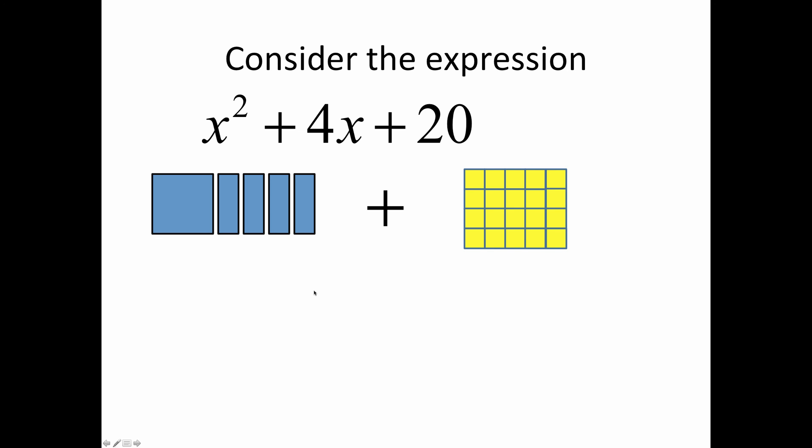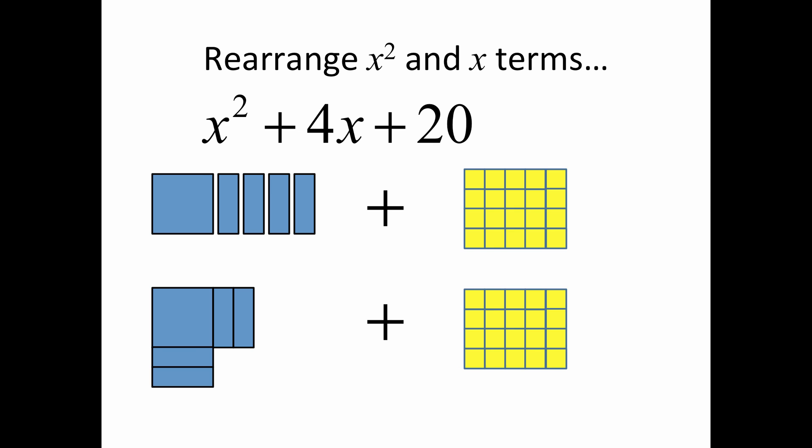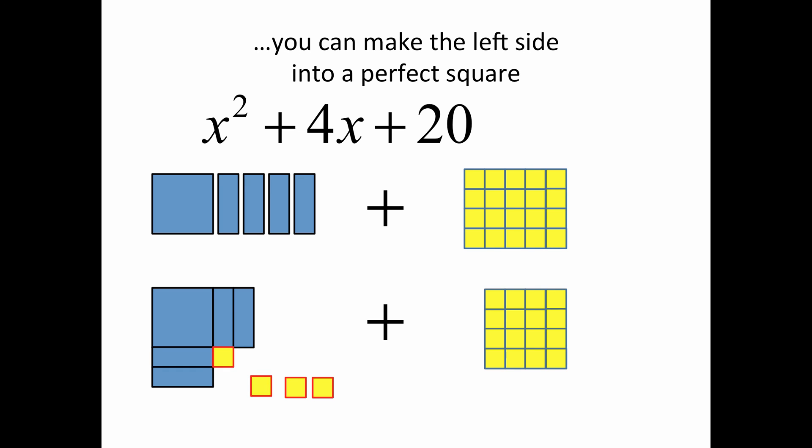We can rearrange the blocks by taking the x² and putting two x blocks to the right and two x blocks below, leaving a corner open. We can fill that corner with four units from the 20 that we had, and we can see that we have completed a square.